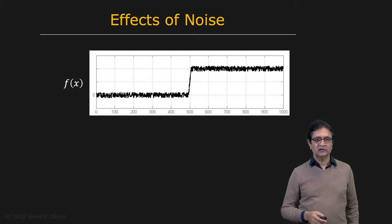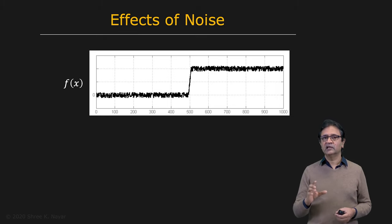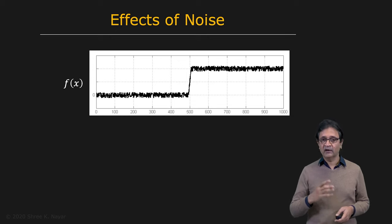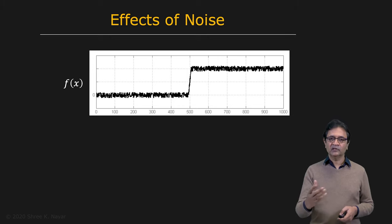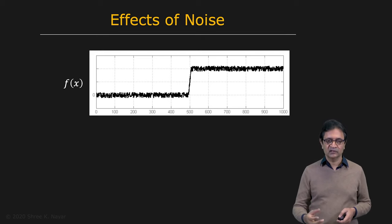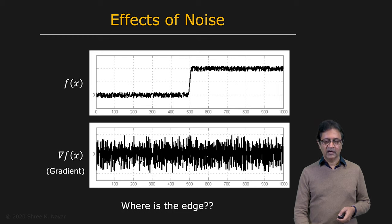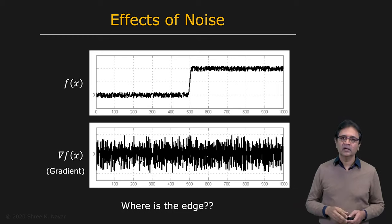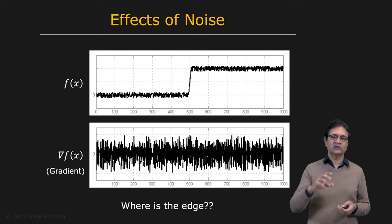Now let's talk about noise, which we set aside earlier. Noise is why edges don't appear as perfect edges in images. Noise on an edge — shown here in a 1D example — looks something like this, and even this is not very strong noise. The problem is that noise changes rapidly everywhere, and we are in the business of finding rapid changes — that's what edge detection is. So if you take even the first derivative of a noisy signal, you can see that the edge is completely lost. We need to suppress noise before applying edge detection.